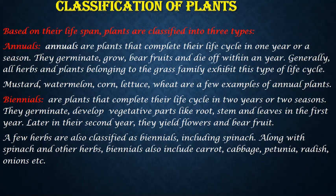Biennials are plants that complete their life cycle in two years or two seasons. They germinate and develop vegetative parts like roots, stem and leaves in the first year. In the second year, they yield flowers and bear fruit. A few herbs are also classified as biennials including spinach, carrot, cabbage, petunia, radish, onions, etc.